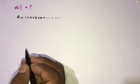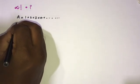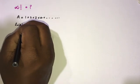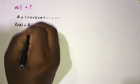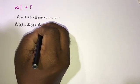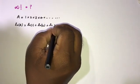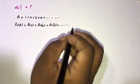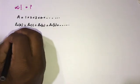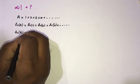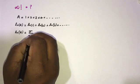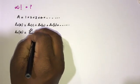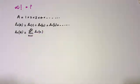We can take the natural log of both sides, so natural log of A is equal to, according to the property of natural log, natural log of 1 plus natural log of 2 plus natural log of 3, and this is going to infinity. We can write this sum using sigma notation: n equals 1 to infinity of natural log of n.